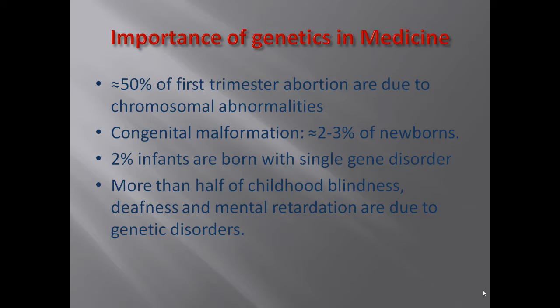Now, what is the importance of genetics in medicine? Fifty percent of first trimester abortions are due to chromosomal abnormalities. There is an increased incidence of abortion when chromosomal abnormalities are present. Two to three percent of newborns contain congenital malformations due to chromosomal abnormalities.